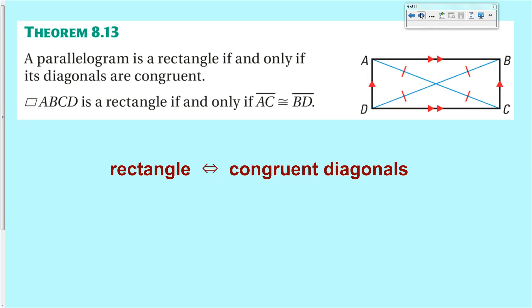And the third and final theorem, theorem 8.13, is about rectangles, and it simply states that if you have a rectangle, then its diagonals are congruent, or if you have a quadrilateral with congruent diagonals, then it must be a rectangle. So this is a way that you can prove that the diagonals are congruent, or that you have a rectangle.